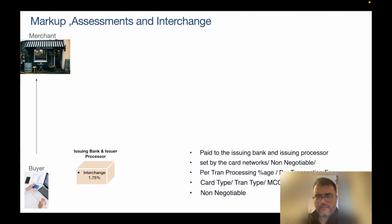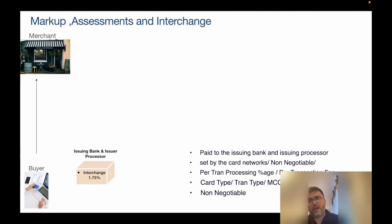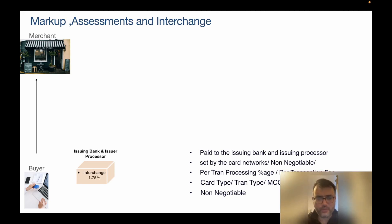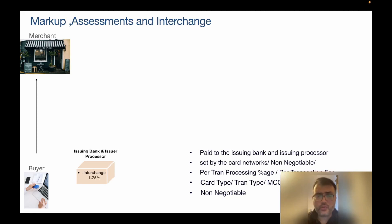Interchange is paid to the issuing bank and issuing processor — it's also called pass-through interchange. The acquirer collects it on behalf of the issuer and then pays it back to the issuer. This is set by the card networks and is non-negotiable. The different card network bodies set and revise this from time to time.